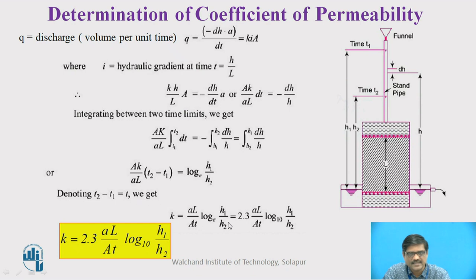We get this equation: AL upon AT log to the base 10 H1 upon H2. Further, log to the base e is replaced by log to the base 10 by multiplying by 2.3. Ultimately, we get a simple equation: K equals 2.3 AL upon AT log to the base 10 H1 upon H2, where A is the area of standpipe, L is the length of the sample, capital A is the cross section area of the soil sample, T is the time interval, H1 is the initial head and H2 is the final head. These parameters are collected in the laboratory and substituting in this equation, we get the value of K.